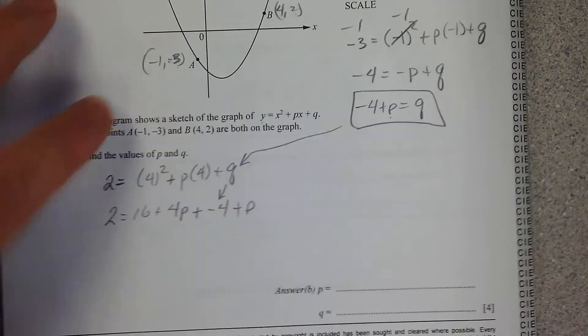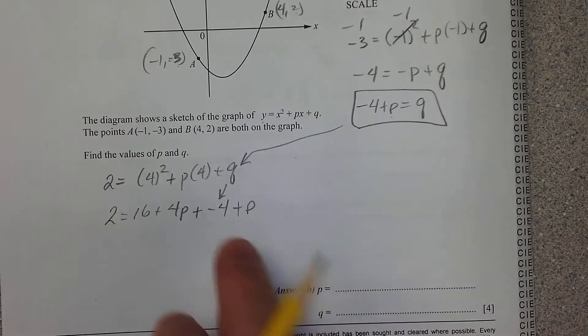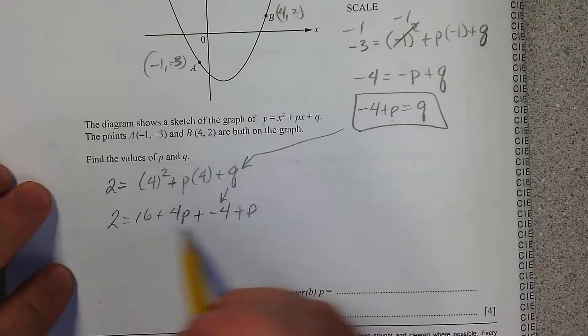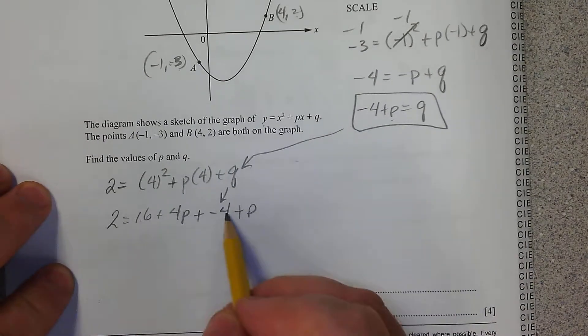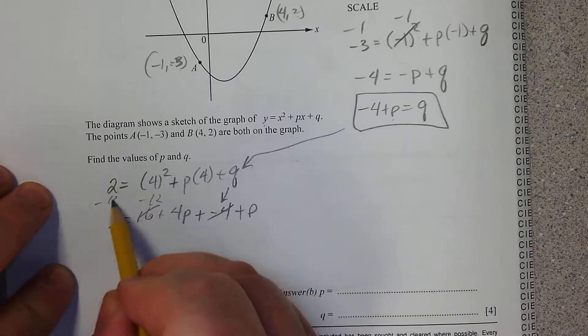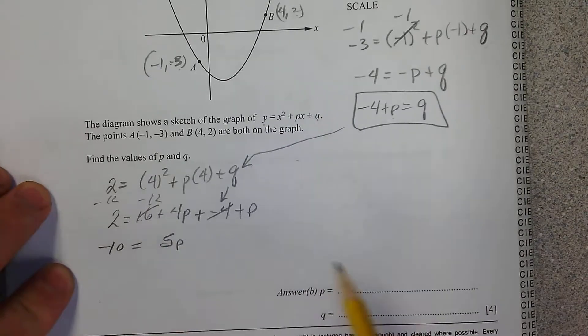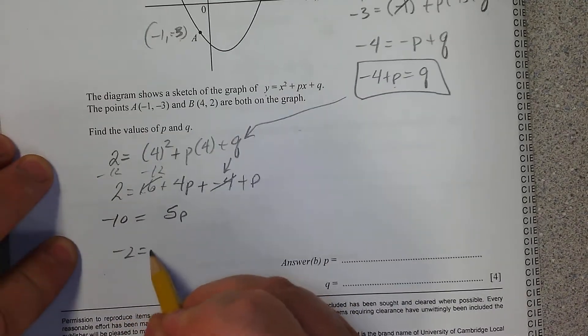Let's go ahead and clean this up. That's 12, right? These two make 12. So I'm going to subtract 12 from both sides. That's going to give me negative 10 equals 5p. Negative 2 equals p.